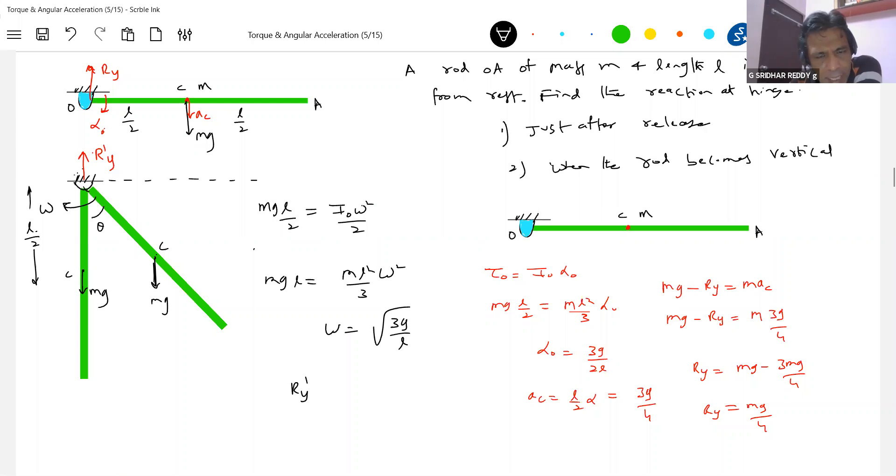And what about the reaction? Now the reaction, R Y dash, should be equal to MG plus M Omega square L by 2. Why M Omega square? Pseudo force will also act. Now why the pseudo force we have to show it. Centrifugal force, or the rod is swinging. So this is the pseudo force is what I'm writing it. This will call it as centrifugal force. R Y dash minus M G should be equal to M Omega square L by 2. M Omega square, it's left to you.